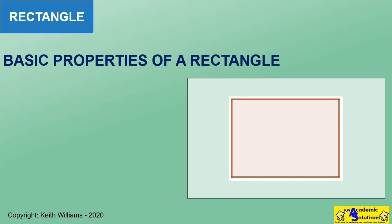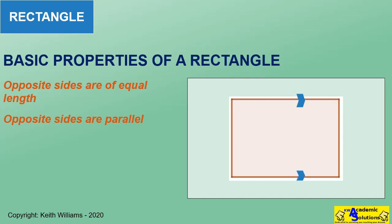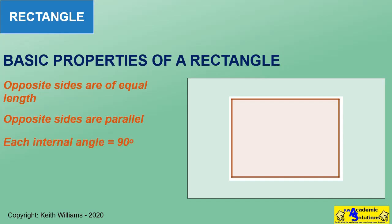Opposite sides of a rectangle are of equal length. Opposite sides of a rectangle are parallel to each other. The size of each internal angle of a rectangle is equal to 90 degrees.